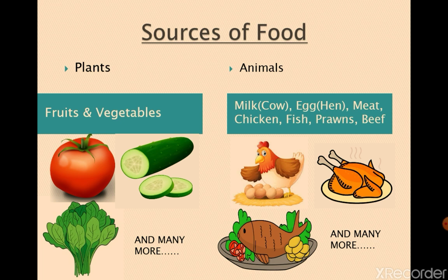From where do we get this food? From plants and animals. What kind of food do plants give us? Tomato, spinach, cucumber — these are vegetables and fruits. And what kind of food do animals give us? Milk, egg, meat, chicken, fish, prawns and beef.